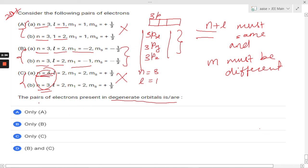So we concluded that only B is having the degenerate orbitals. So only B, option B is correct. Hope you got it. Thanks for watching and have a good day.